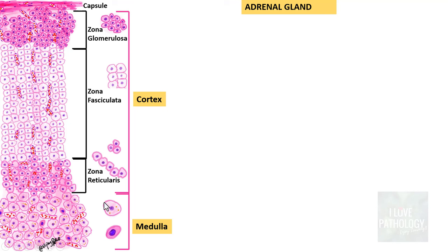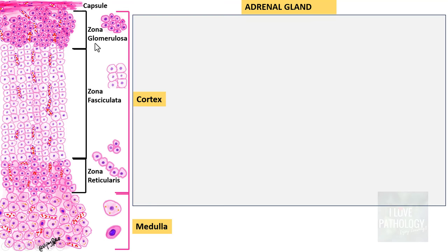The chromaffin cells are large polygonal cells with abundant eosinophilic granular cytoplasm. That's about the histology of the Adrenal Gland — there is a Cortex and a Medulla, and the Cortex is comprised of Zona Glomerulosa, Zona Fasiculata, and Zona Reticularis. Remember GFR: Glomerulosa, Fasiculata, and Reticularis.